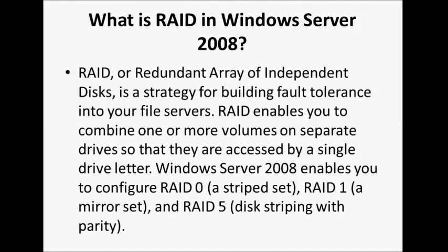What is RAID in Windows Server 2008? RAID, or Redundant Array of Independent Disks, is a strategy for building fault tolerance into your file servers. RAID enables you to combine one or more volumes on separate drives so that they are accessed by a single drive letter. Windows Server 2008 enables you to configure RAID 0 (a striped set), RAID 1 (a mirror set), and RAID 5 (disk striping with parity).